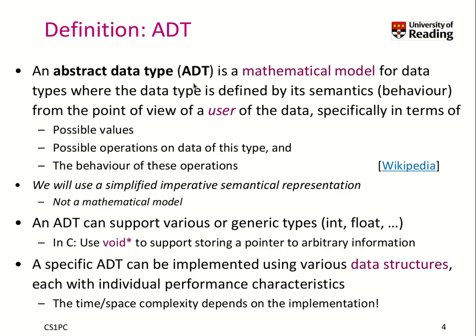An abstract data type, or ADT in short, is a mathematical model for data types where you have the data type defined by its semantics, which means its behavior, from the point of view of a user — which in this case is a programmer.